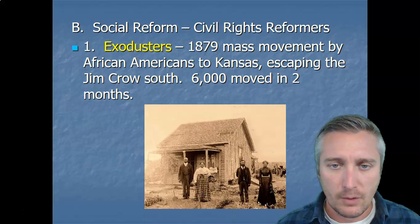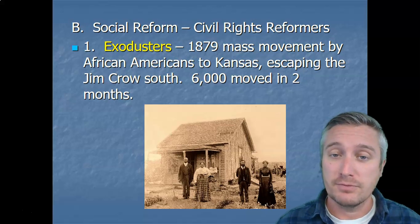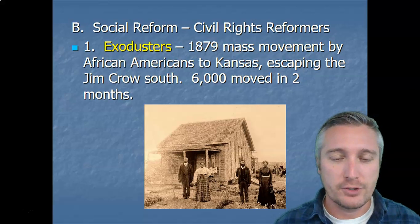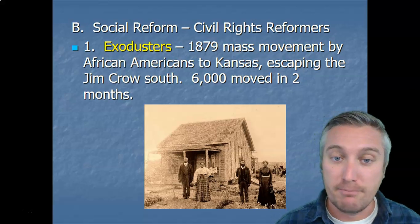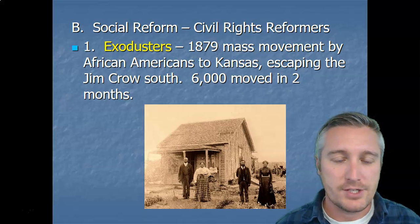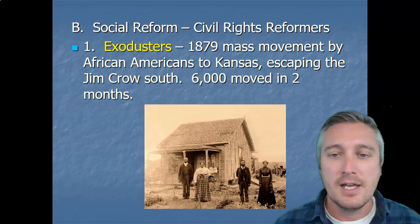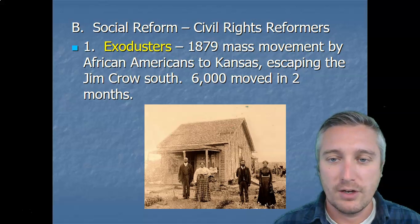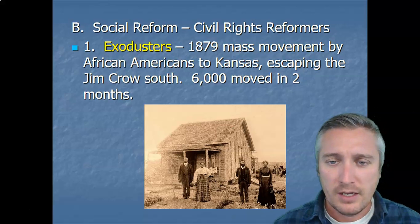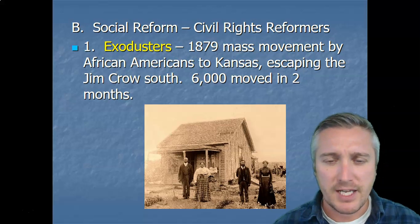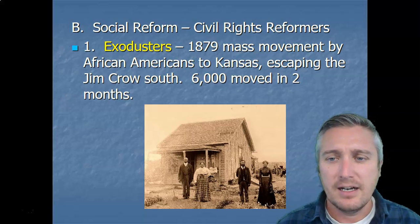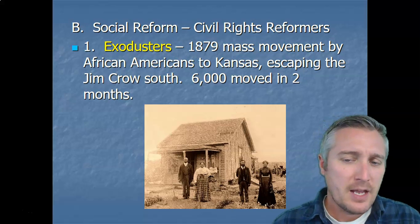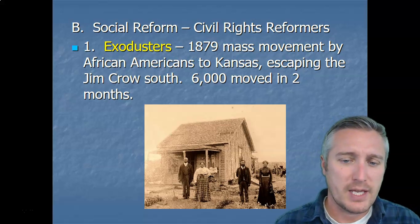These migrants called themselves Exodusters — with the root word Exodus — referring, if you're familiar with Bible stories, to Moses leading the children of Israel out of Egypt, out of bondage. They referred to their own Exodus from the South into, of all places, Kansas. Kansas has a history there — with its founding as a free state, there's a history of anti-slavery sentiment in Kansas. About 6,000 people moved out of the South into Kansas over the next two months. And in 1879, Kansas was still kind of frontier, especially along the western side.